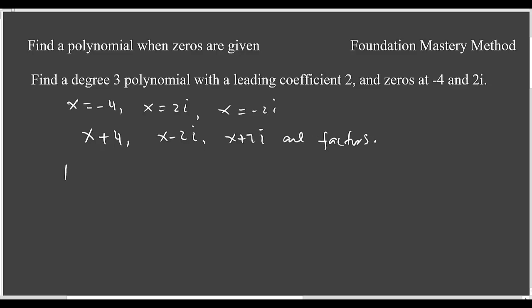So the polynomial will be P(x) which has a leading coefficient of 2. So you can keep it 2 in front, write the factors: x plus 4, x minus 2i, x plus 2i. Now if they ask that find the polynomial with real coefficients then we have to simplify this one.